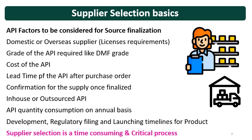Then consider the lead time of the API after purchase order — what is the time required for the supplier to provide you the material. Then confirmation of supply is finalized. It is not like that a supplier is saying they will provide the material, but when you order, they say they don't have it. So you have to confirm whether the supplier can supply the material or not.